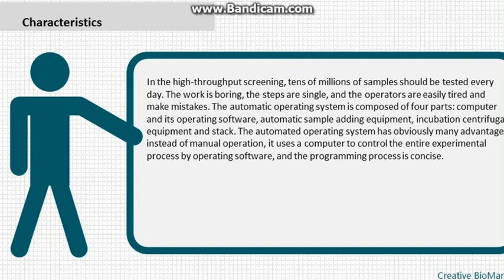The automatic operating system is composed of four parts: computer and its operating software, automatic sample-adding equipment, incubation and centrifugal equipment, and stacking systems. The automated operating system has many advantages over manual operation — it uses a computer to control the entire experimental process via operating software, and the programming process is concise.